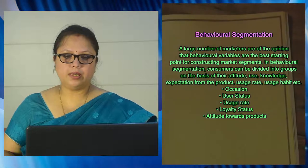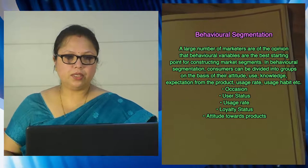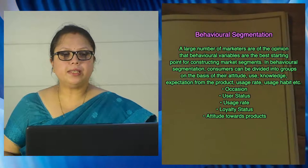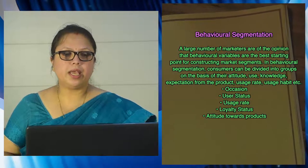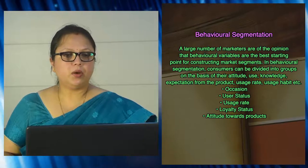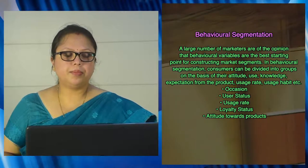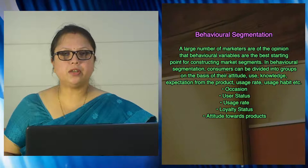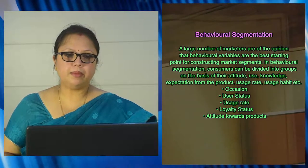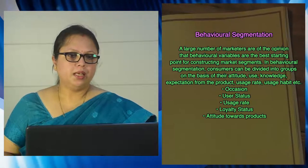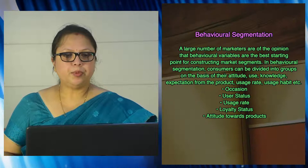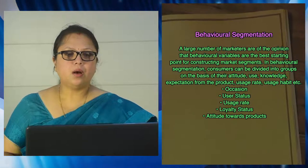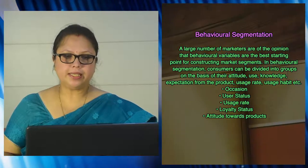Then user status: non-user, ex-user, potential user, regular user, etc., are different categories of buyers. Then user's rate — how frequently they use the product, whether light users or heavy users. Then loyalty status — some people are hardcore loyal towards a product and will purchase only that particular product, while others have shifting loyalties and might purchase a different product next time. And then attitude towards the product — whether they have a positive, negative, or indifferent attitude. Based on all these things, the market can be segmented.